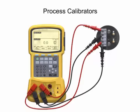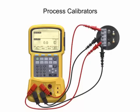With a transmitter range of 4 to 20 milliamps, the expected output at the low end of the temperature range of 0 degrees Celsius is 4 milliamps. At the high end of the temperature range of 100 degrees Celsius, the expected output of the transmitter is 20 milliamps.